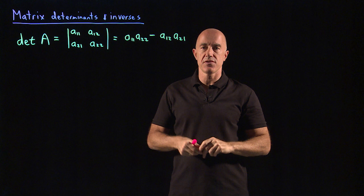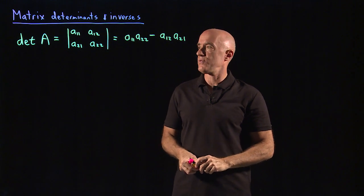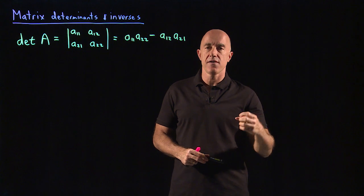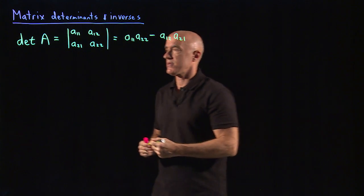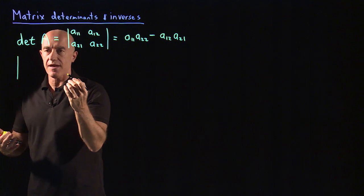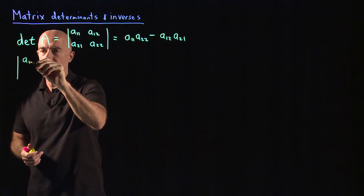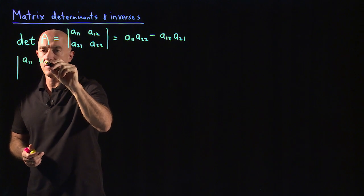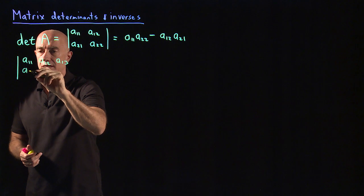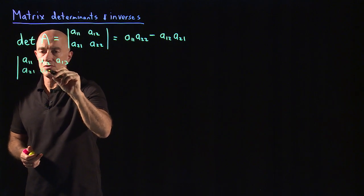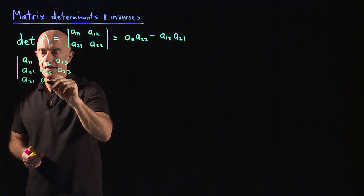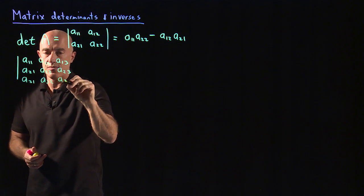That's the definition of the determinant of a two by two matrix. If we want to find the determinant of a three by three matrix, I will write that as this absolute value sign. So we have a three by three matrix: A11, A12, A13, A21, A22, A23, and A31, A32, A33.